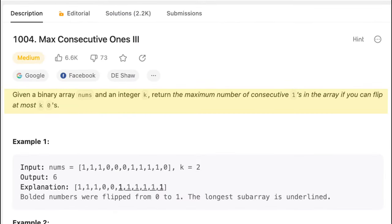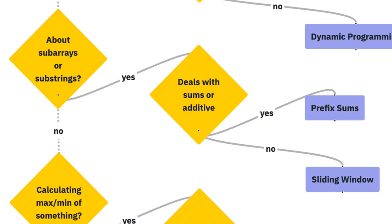Given a binary array nums and an integer k, return the maximum number of consecutive ones in the array if you can flip at most k zeros. In this problem, we can observe the keyword consecutive, which suggests a relation to subarrays. We should refer to the subarray node in our flowchart.